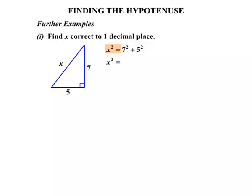So we have x squared equals, write that down. And on the calculator, 7 squared plus 5 squared works out to be 74.